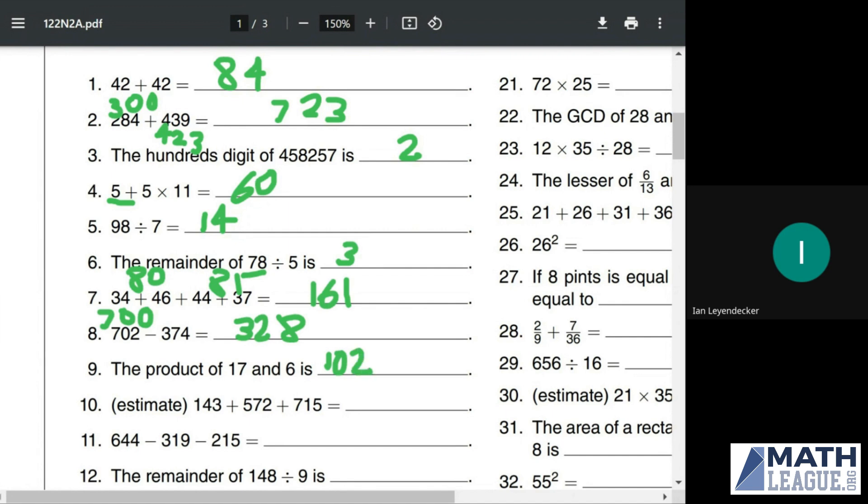And then here we have an estimation question, 143 plus 572 plus 715. We can estimate this to the nearest multiples of 25. This would go to 150 and would round up. This would also round up to 575. Could also round this one up, but we could also round it down to make it just a little bit easier and a little bit more likely to end up in the estimation range we want because for our estimation questions we want to be within 5% of the answer on either side. So then we just add up 150 plus 575 is 725, 725 plus 700 is 1425.